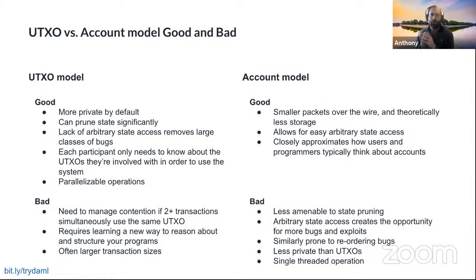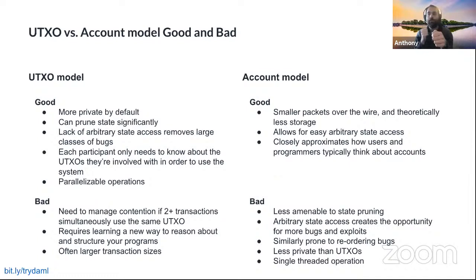Account models also tend to be single-threaded. When you're making state updates with account models that come with arbitrary state access, you can only have single-threaded operations — if I'm doing a transaction and yours goes first, my transaction cannot happen until yours has resolved. There's essentially a lock on all state. This mainly applies when there's arbitrary state access in account models, and I have yet to see an account model that doesn't generally allow for arbitrary state access.